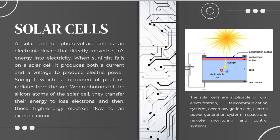Solar cells. A solar cell or photovoltaic cell is an electronic device that directly converts the sun's energy into electricity. When sunlight falls on a solar cell, it produces both a current and a voltage to produce electric power. Sunlight, which is composed of photons, radiates from the sun. When photons hit the silicon atoms of the solar cell, they transfer their energy to loose electrons, and these high-energy electrons flow to an external circuit. Solar cells are applicable in rural electrification, telecommunication systems, ocean navigation aids, electric power generation in space, and remote monitoring and control systems.